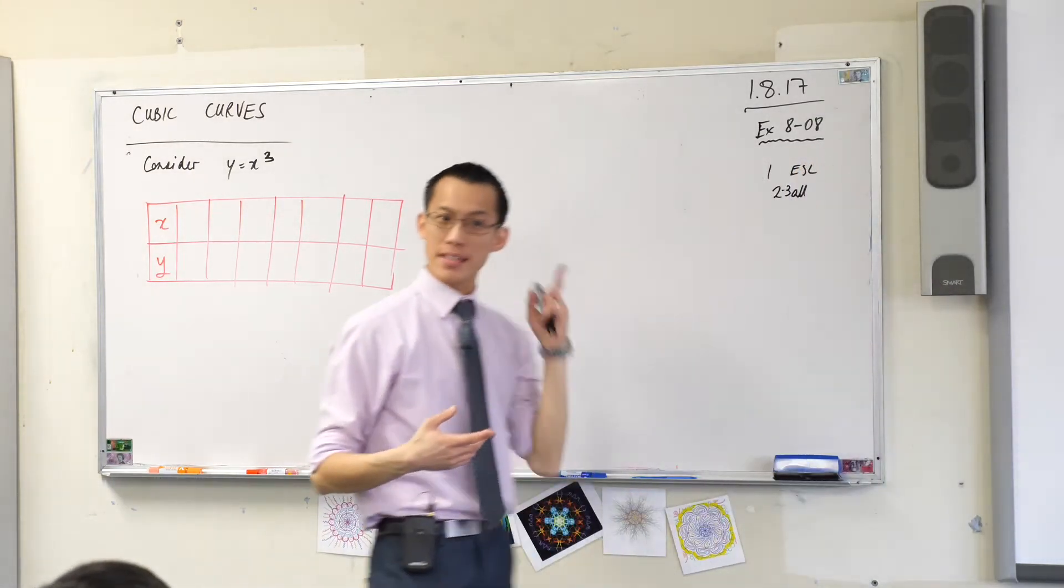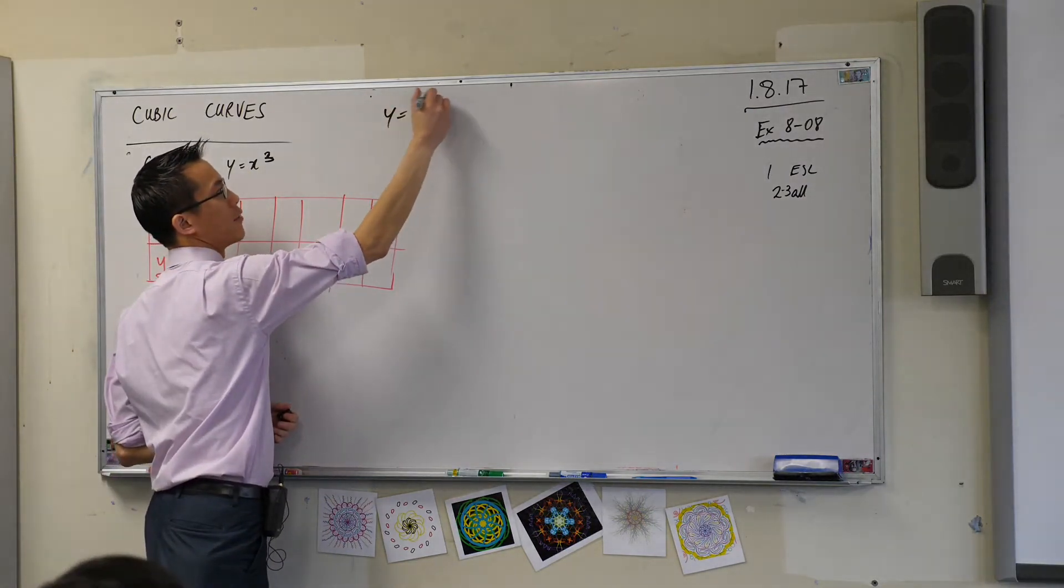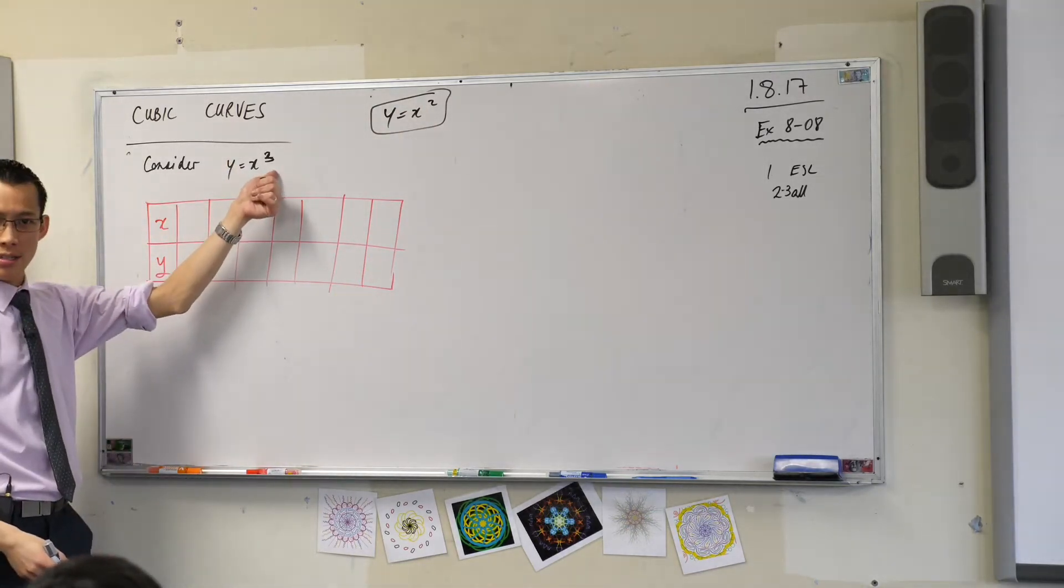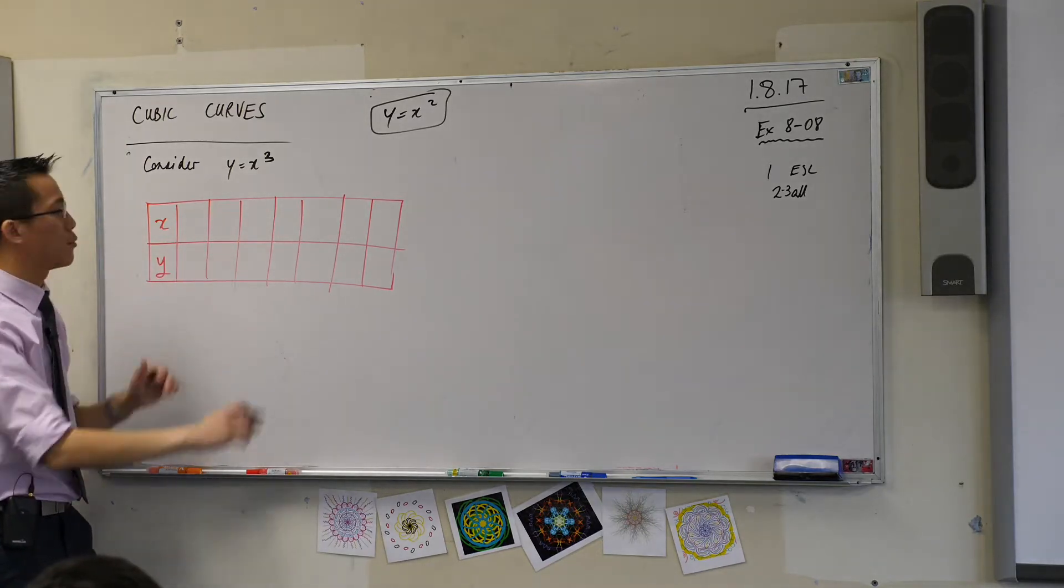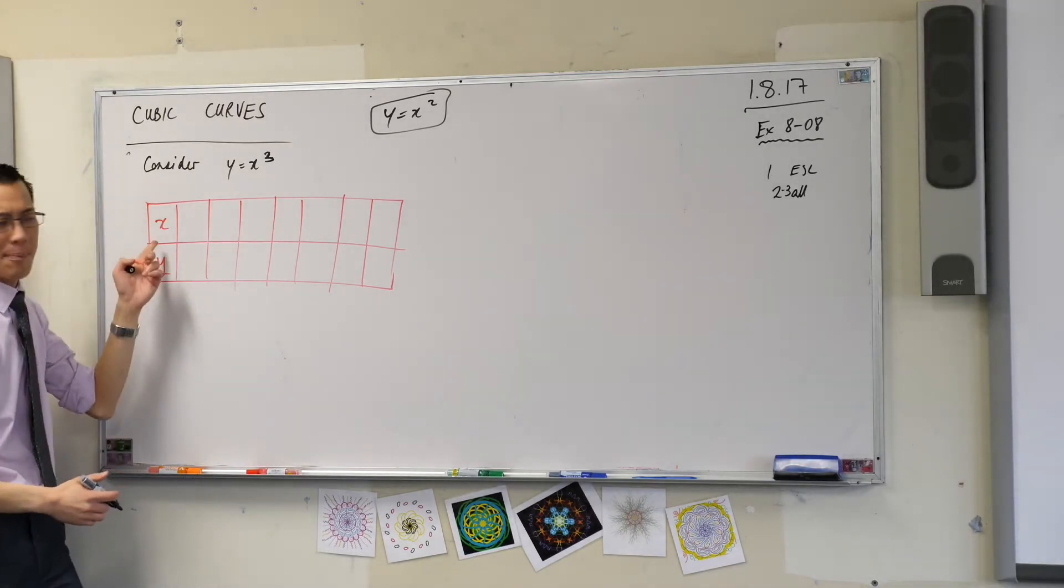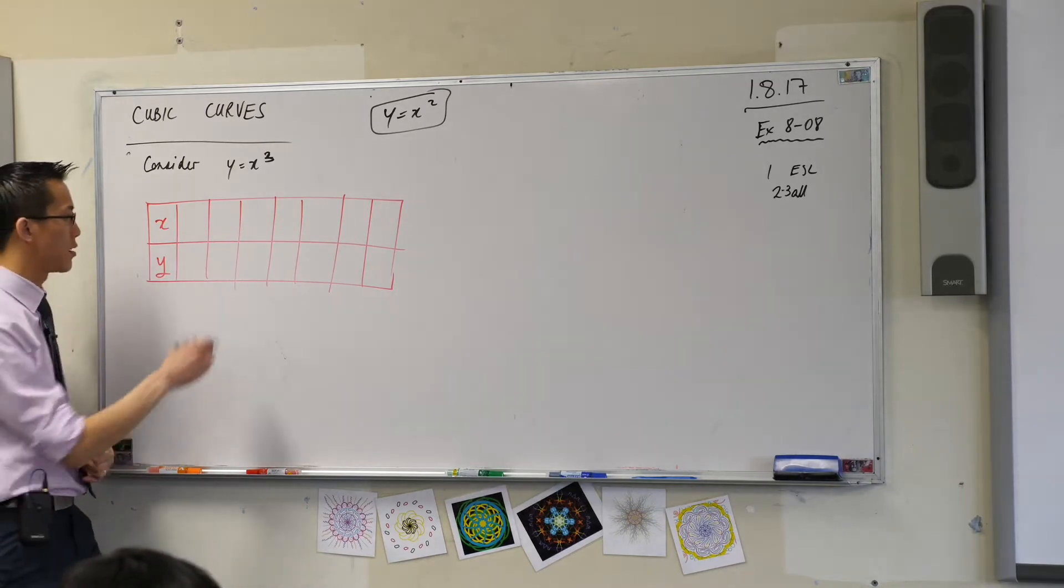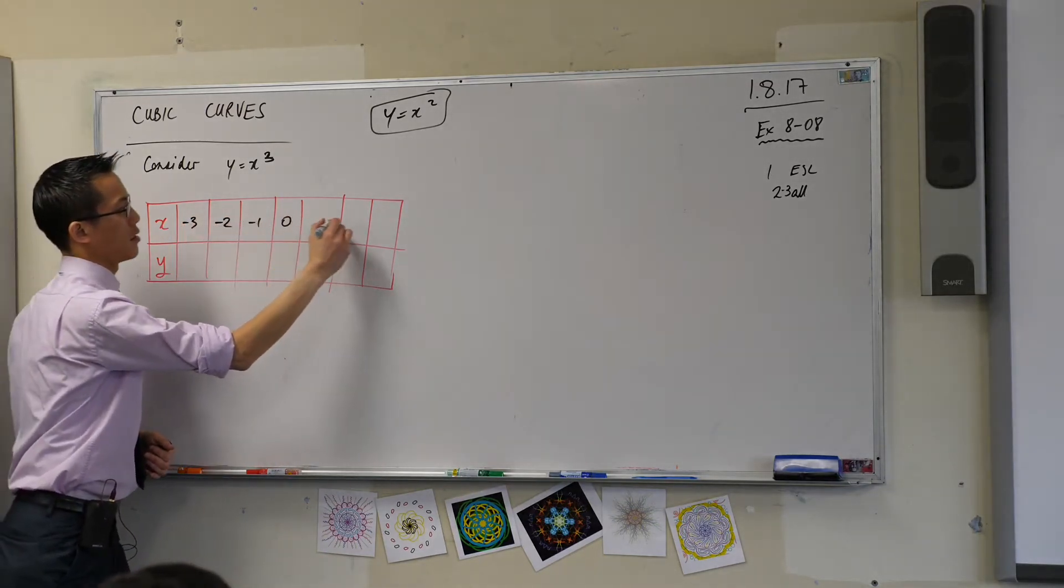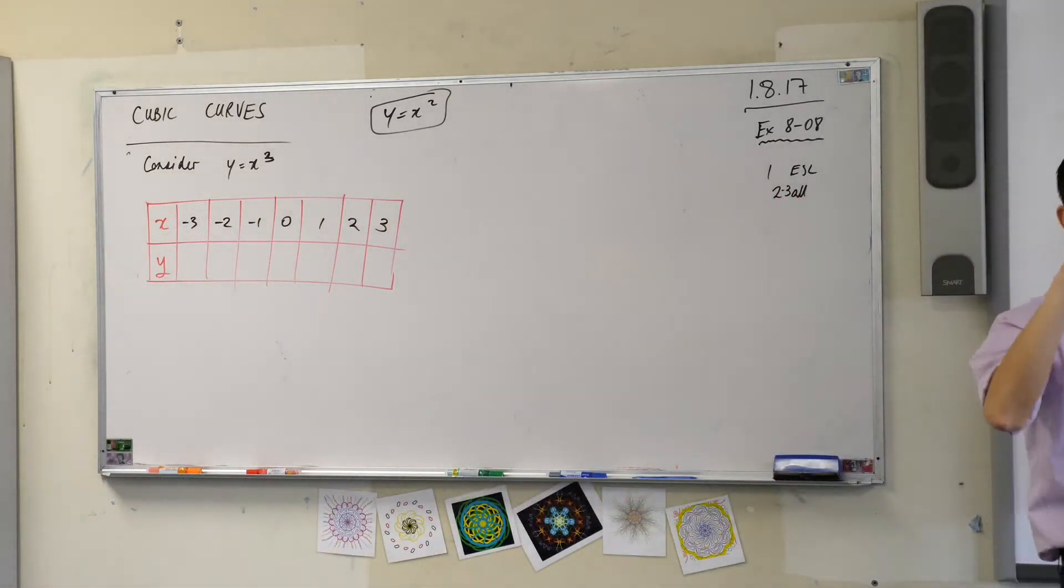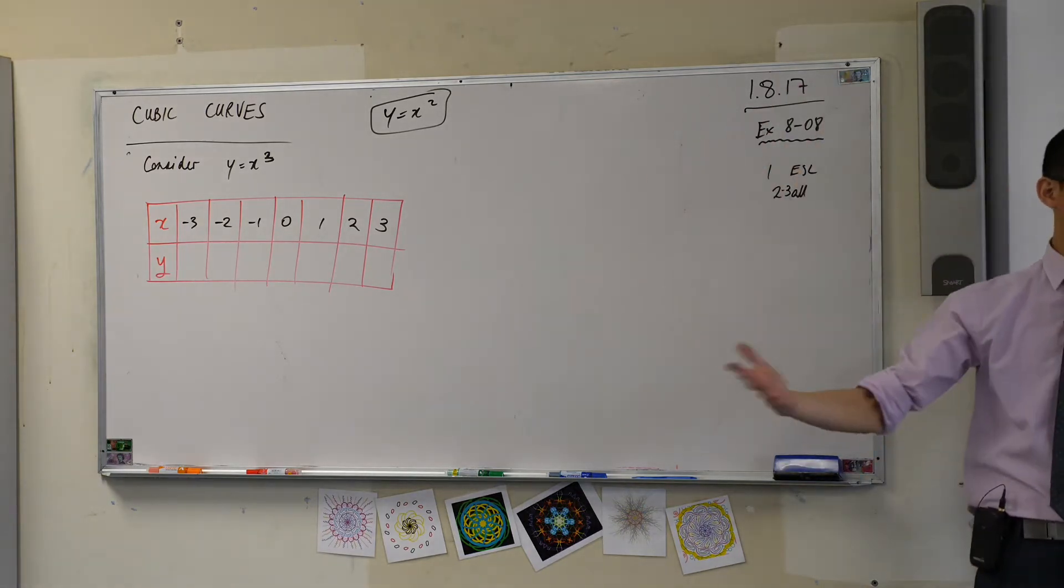I want us to consider this equation y equals x cubed. We know what happens for this, we're very familiar with this shape, but what happens for this guy? So go ahead, if you haven't already, draw up this table for me. What we're going to do is try out some values. What happens for different values of x? What does the graph look like if we join up the dots? So these are the values I'm going to try out.